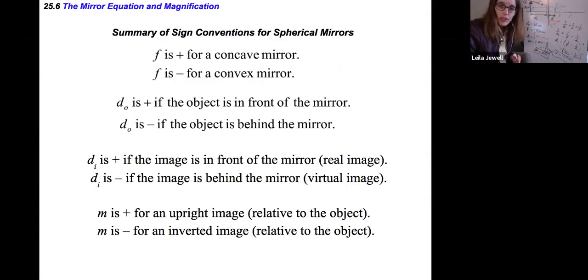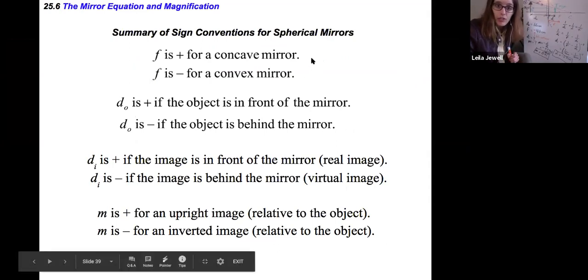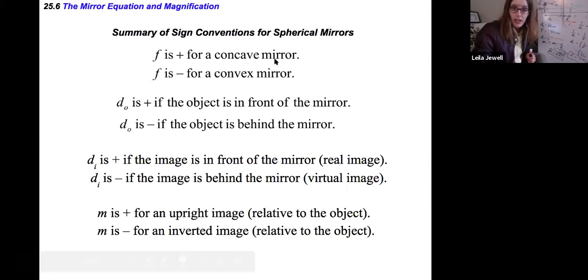The important thing is keeping track of the sign conventions. You can write this on your crib sheet. f is positive if it's a concave mirror. If it's convex, f is negative. You usually have to fill that in. d_o is basically always positive. We don't really deal with situations where the object's behind the mirror. We could do that with lenses, but basically d_o is always positive, in front of the mirror.